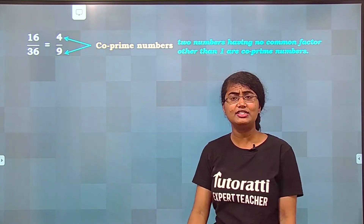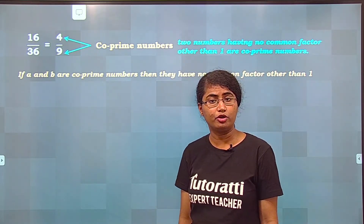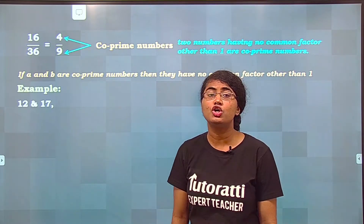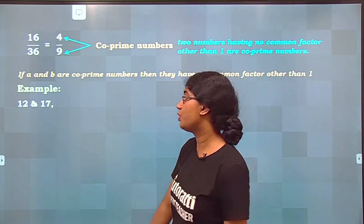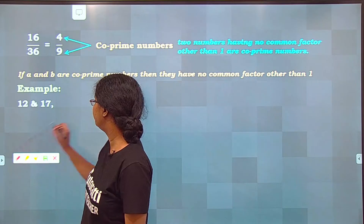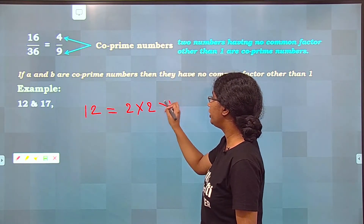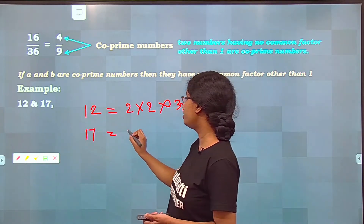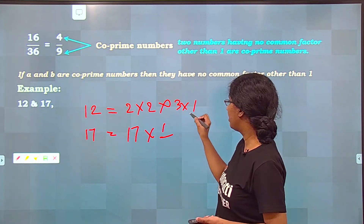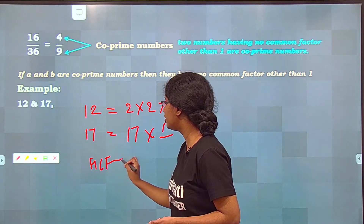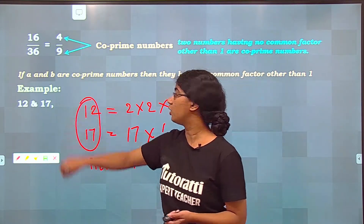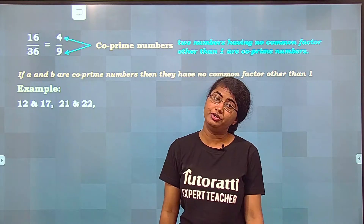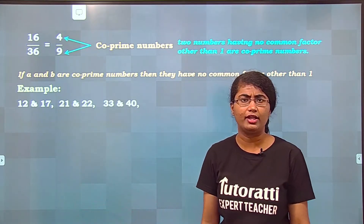Let's take a couple more examples. If A and B are co-prime numbers, they have no common factor other than 1. Take 12 and 17: 12 can be written as 2 × 2 × 3 × 1, and 17 is a prime number written as 17 × 1. What is common? Only 1. So the HCF of these two numbers is 1, which means 12 and 17 are co-prime numbers. Similarly, 21 and 22, 33 and 40, and the list goes on.